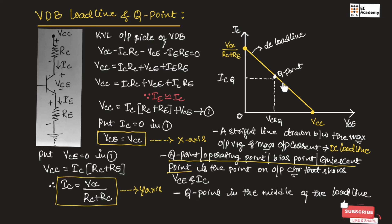If this Q point moves below towards the x-axis, the transistor moves into the cutoff region. If the Q point moves towards IC on the load line, the transistor moves into the saturation region. This is about voltage divider bias, load line and Q point. Hope you have understood the topic. Thank you.